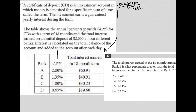APY is my second column here, and the third column is total interest earned in the 18-month term. Then I have the different banks — each bank has a different APY and therefore a different amount of money earned over those 18 months. The initial deposit is $2,000, so that's how much money we're putting in initially at four different banks.